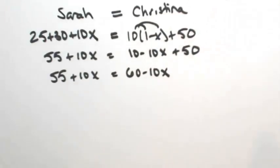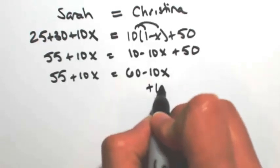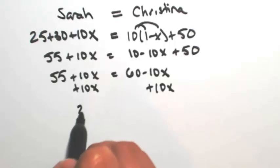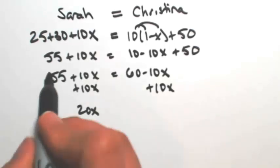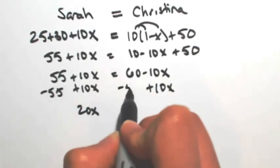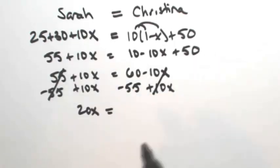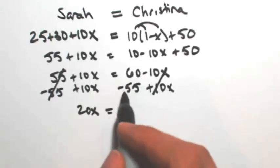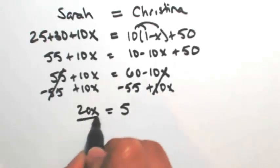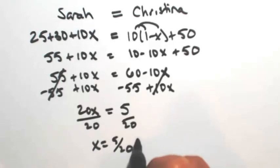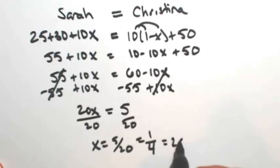Getting the x's on one side, I'm going to add 10x, so that gives me 20x. Then I'm going to subtract the 55 to get the number on the other side. So 20x equals 60 minus 55, which is 5. Dividing both sides by 20, x is equal to 5 over 20, or the same as 1 quarter, or we could say 25%.